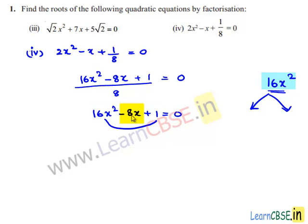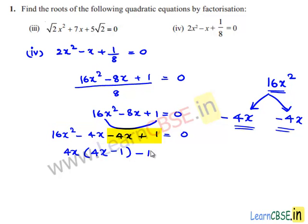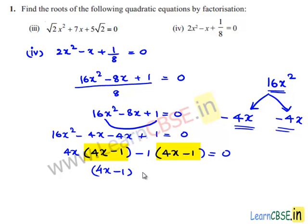4x and 4x: their product is 16x squared, and with minus signs, minus 4x plus minus 4x equals minus 8x, satisfying both conditions. So 16x squared minus 4x minus 4x plus 1 equals 0. Taking 4x as common from the first and second terms gives 4x(4x minus 1), and taking minus 1 as common from the third and fourth terms gives minus 1(4x minus 1), all equal to 0.